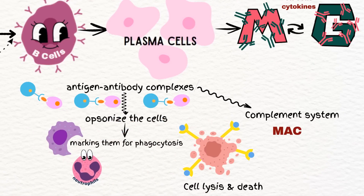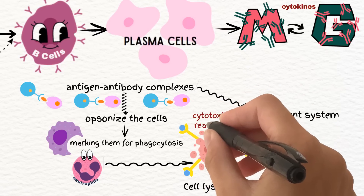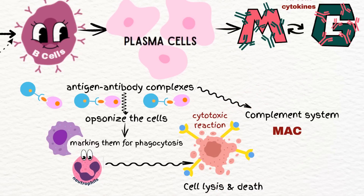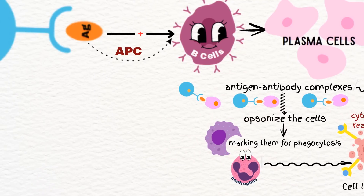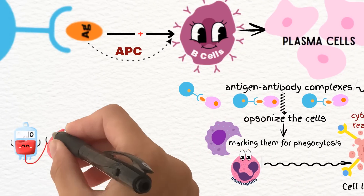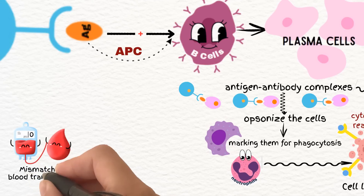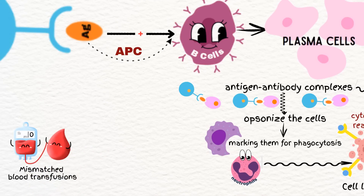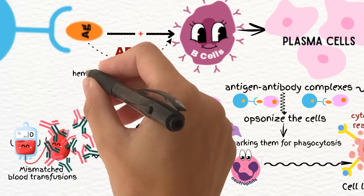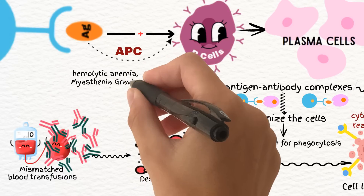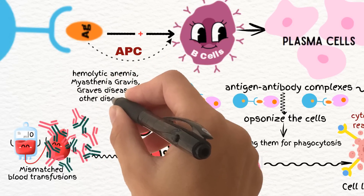Hence the name cytotoxic reaction. This destruction results in conditions like hemolytic anemia, thrombocytopenia, and leukopenia. The best example is the reaction associated with mismatched blood transfusions, where antibodies against donor red blood cells lead to their destruction. It's also seen in hemolytic anemia, myasthenia gravis, Graves' disease, and other disorders.